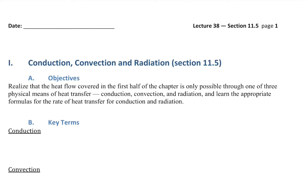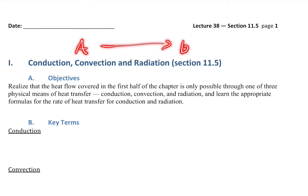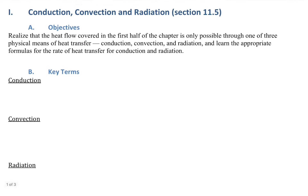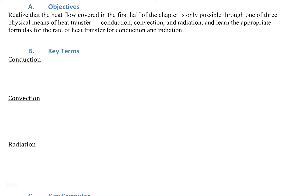Hello, and welcome to the lecture on conduction, convection, and radiation, collectively known as heat flow. This section, at the end of chapter 11, is about how heat — represented by the letter Q — gets from point A to point B: the rate at which heat flows, Q per time. There are three mechanisms: conduction, convection, and radiation.